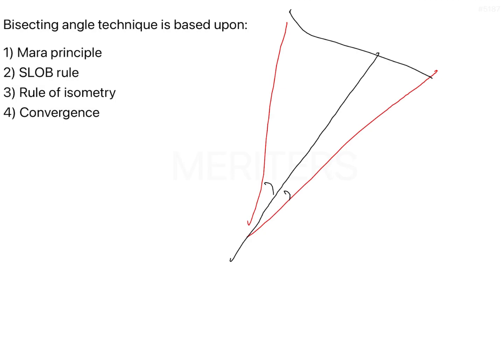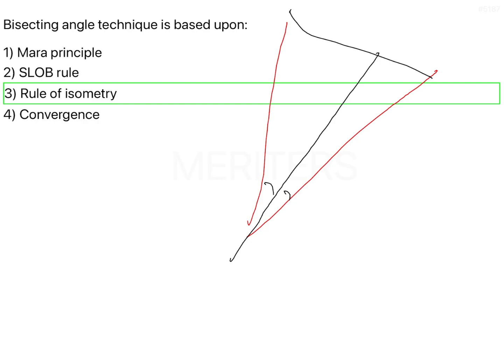The SLOB rule—Same Lingual Opposite Buccal—is also called the tube shift technique. This is used for object localization to determine the exact location of an object in dental radiography.